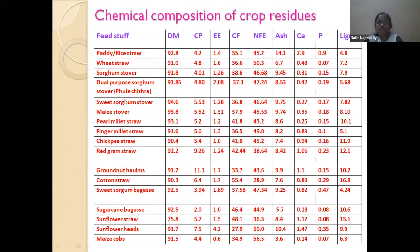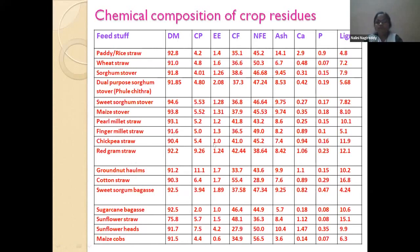Sweet sorghum bagasse is the residue after sweet sorghum is harvested for ethanol production, and it can be utilized in diets. Sugarcane bagasse is also well known. Sunflower straws, sunflower heads after seed removal, and maize cobs — available after threshing — can also be included. Among all these residues, pulse straws have the highest lignin content, which should be noted.